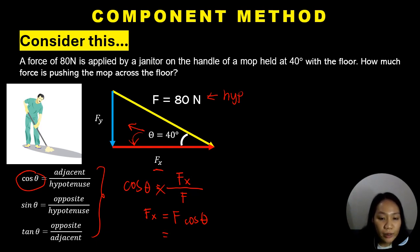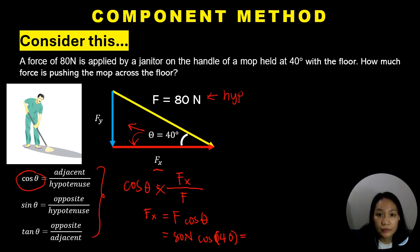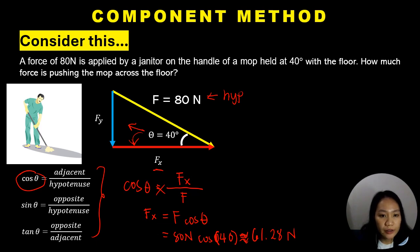Substituting the values — f is 80 newtons, theta is 40 degrees — f sub x equals 80 newtons times cosine 40 degrees. The answer is 61.8 newtons for the horizontal component. Now, what about the vertical component, f sub y?